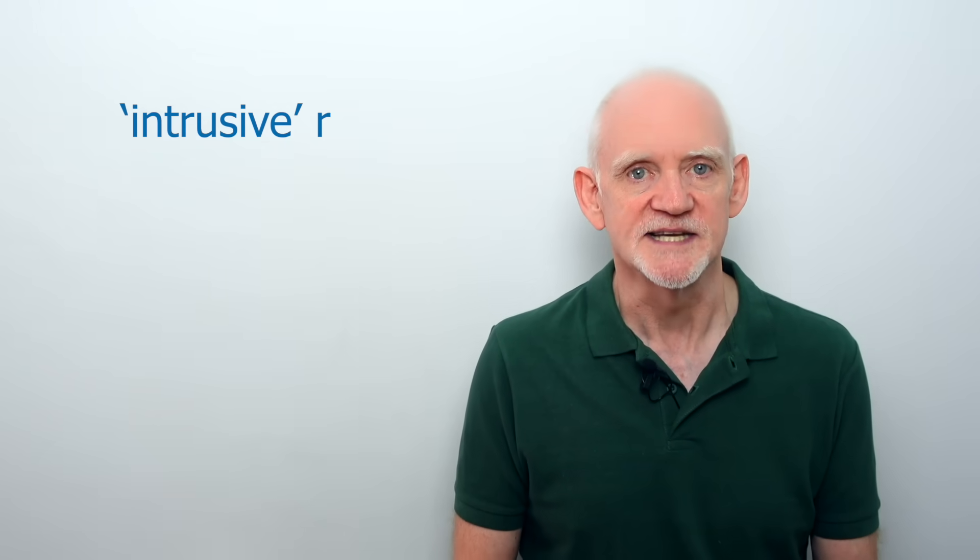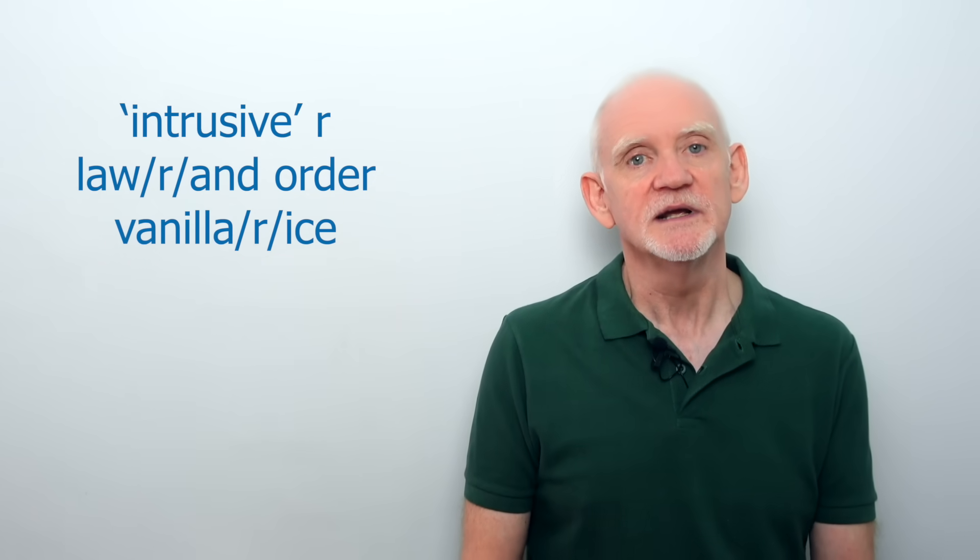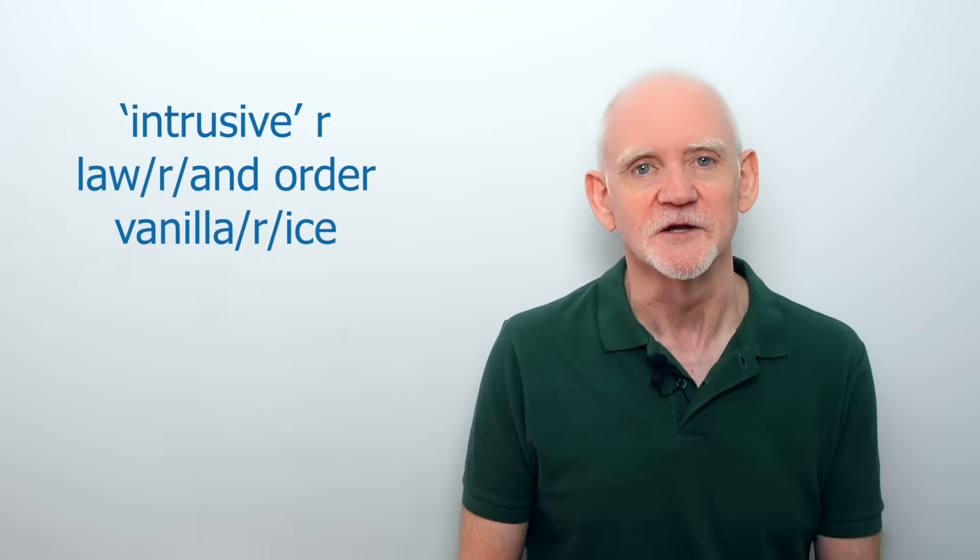So we have this lovely phenomenon of R coloration, where there's no historic trace whatsoever of an R consonant. This makes it quite different from the so-called intrusive R, as in law and order and vanilla rice, which is also found in Australia, as it is in England.